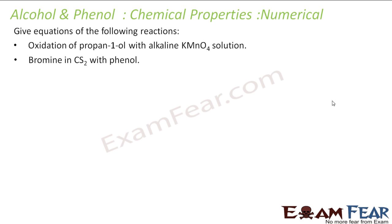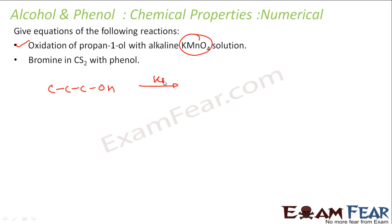Next, we need to give the equation for oxidation of propan-1-ol with alkaline KMnO4. KMnO4 is a very strong oxidizing agent, so it will oxidize propan-1-ol to propanoic acid.